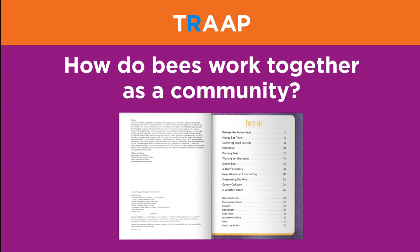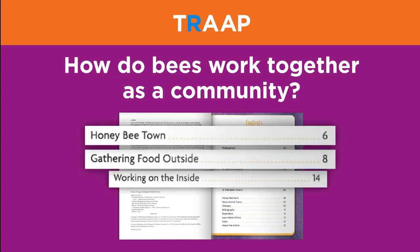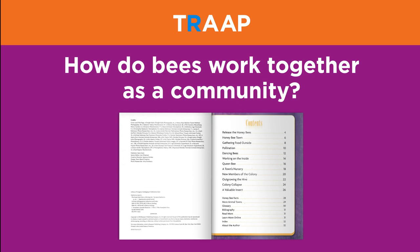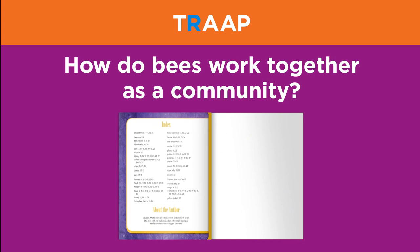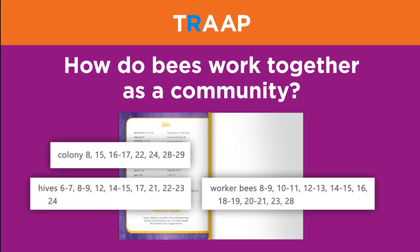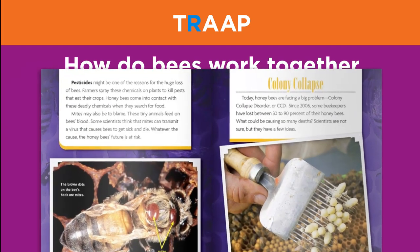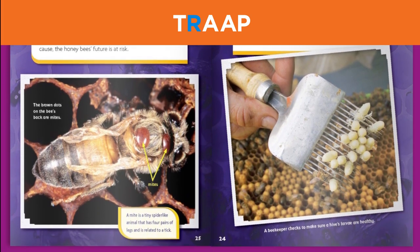The next test in TRAP is Relevance. Looking at the table of contents, it's easy to see that chapters like 'Honeybee Town,' 'Gathering Food Outside,' and 'Working on the Inside' likely have good information to answer our question about bees working together. Looking at the index, we see relevant keywords like colony, hives, and worker bees. The index will be even more helpful once you've done some reading and want to find out more about a specific aspect, perhaps something like royal jelly. Scanning a page or two, this information seems helpful and easy to understand.